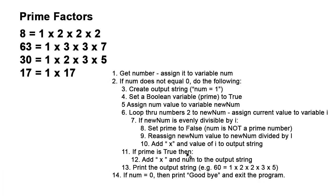Once we've gone through the loop, we're going to ask if prime is true. If it is, we're going to add an x and the number, in this case 1 x 17, because none of this took place. And then we're going to print the output string. So maybe it's going to be 60 equals 1 x 2 x 3 x 5.